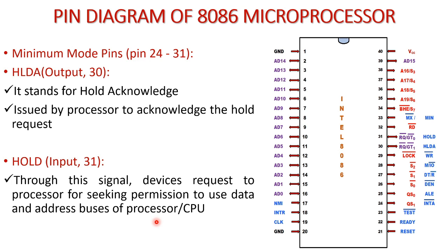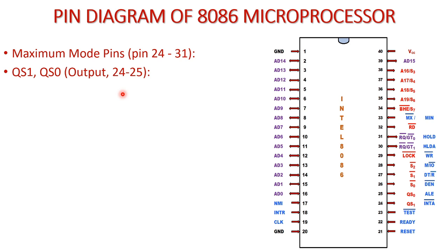In the case of Direct Memory Access (DMA), data can go directly from memory to an input/output port. In that case, the device sends a Hold request to the microprocessor so that the time for data transfer can be saved. The device wanting to transfer data can use the data buses directly to transfer data from memory to the I/O port and from the I/O port to memory. The device issues the Hold request to the 8086 microprocessor, and the microprocessor acknowledges it through the HLDA signal.